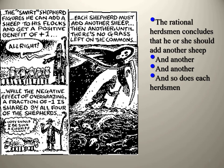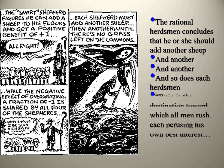Hardin says: 'Ruin is the destination towards which all men rush, each pursuing his own best interests.' People reap all the benefits while the cost is shared among the group, so everyone starts overexploiting the commons, eventually resulting in degradation and destruction. Again, valuing individual success and profit over sustainability — this is a cultural trait, not a natural human trait.